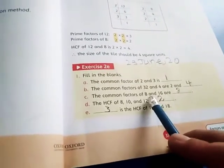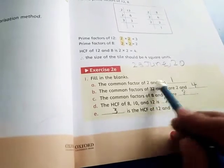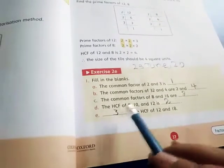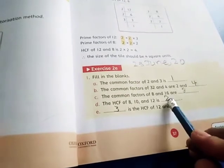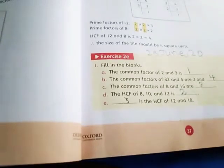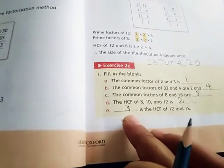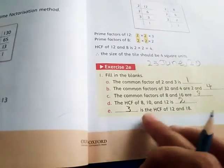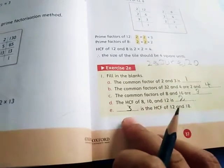The common factors of 8 and 16 are 8. You have to take the factors. The highest common factor of 8, 10, and 12 is 2. The highest common factor of 12 and 18, that is 3.